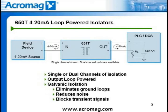Galvanic isolation is provided in the 651T, 652T, and 653T from input to output, and also from channel to channel in the 652T and 653T. This galvanic isolation eliminates potential ground loops. Transient voltage suppression protects equipment from high voltage surges and spikes, and input filtering circuitry reduces noise effects on the analog signal.